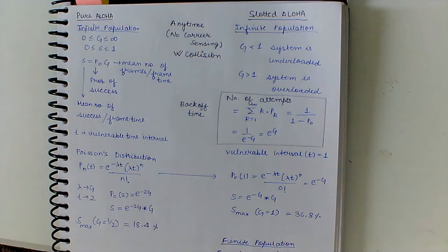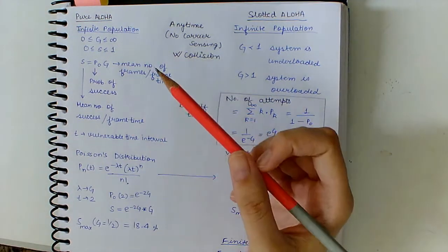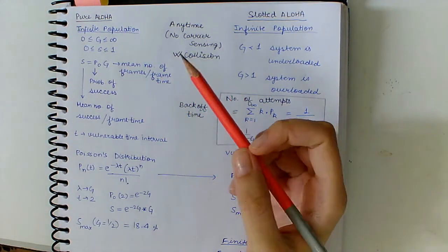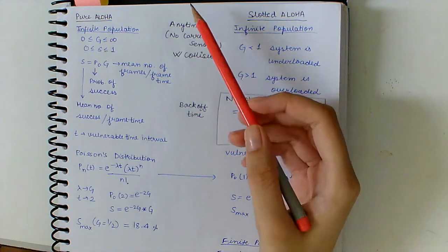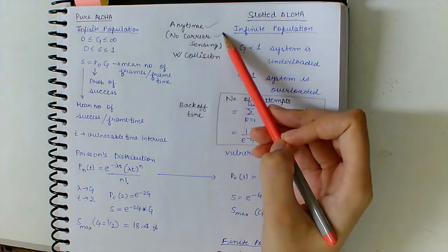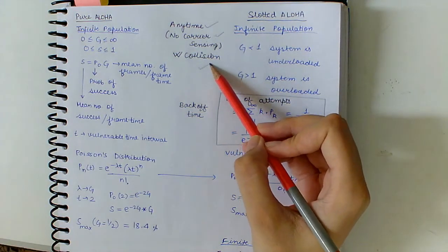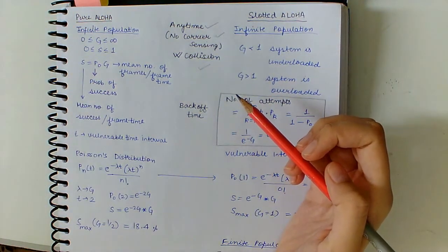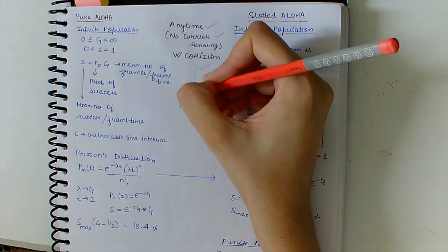Hello everyone, and now let's start our revision with Pure ALOHA. So in Pure ALOHA, we can transmit at any time. There is no carrier sensing, and collisions do occur. So what happens when collisions occur?